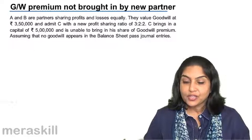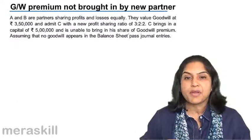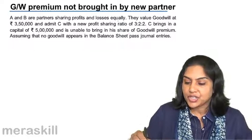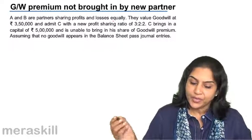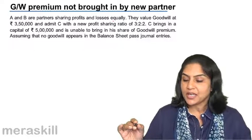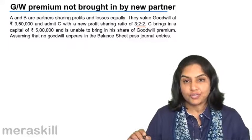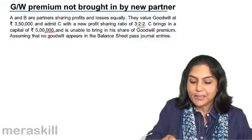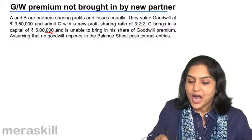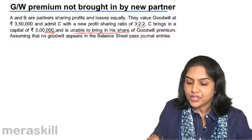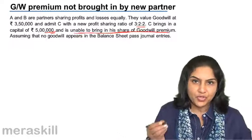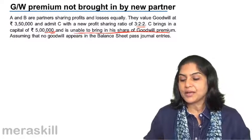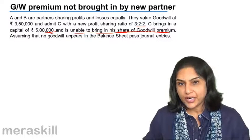What happens if a partner is not able to bring in the premium for goodwill — cash is not brought in? A and B are partners who share profits equally. They value goodwill at 3,50,000 and admit C, with a new profit sharing ratio of 3:2:2. C brings in capital of 5,00,000 but is unable to bring his share of goodwill premium. Assuming no goodwill appears in the balance sheet, pass journal entries.